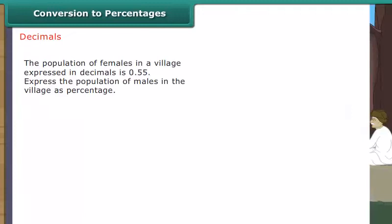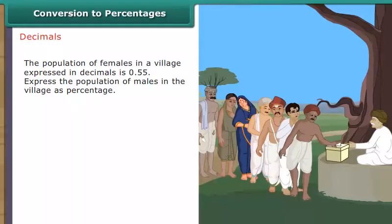Decimals. The population of females in a village expressed in decimals is 0.55. Express the population of males in the village as percentage.